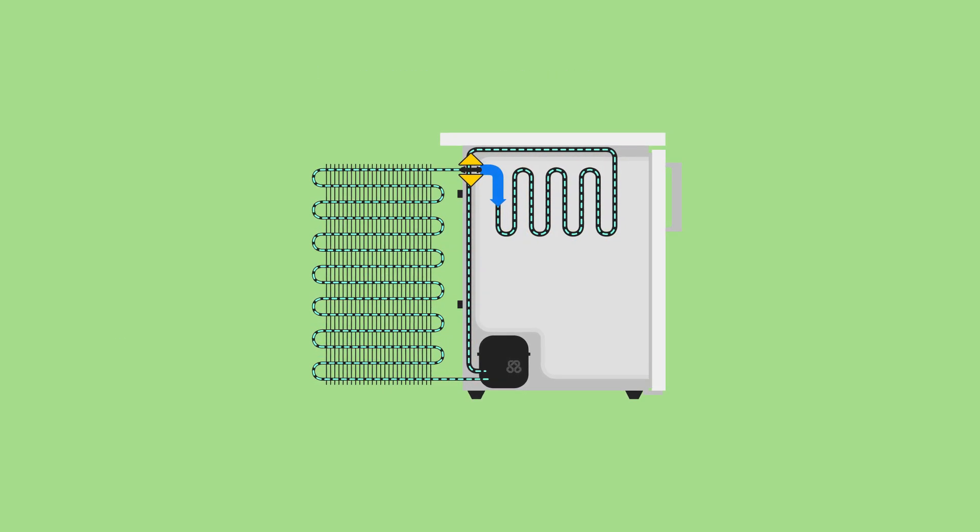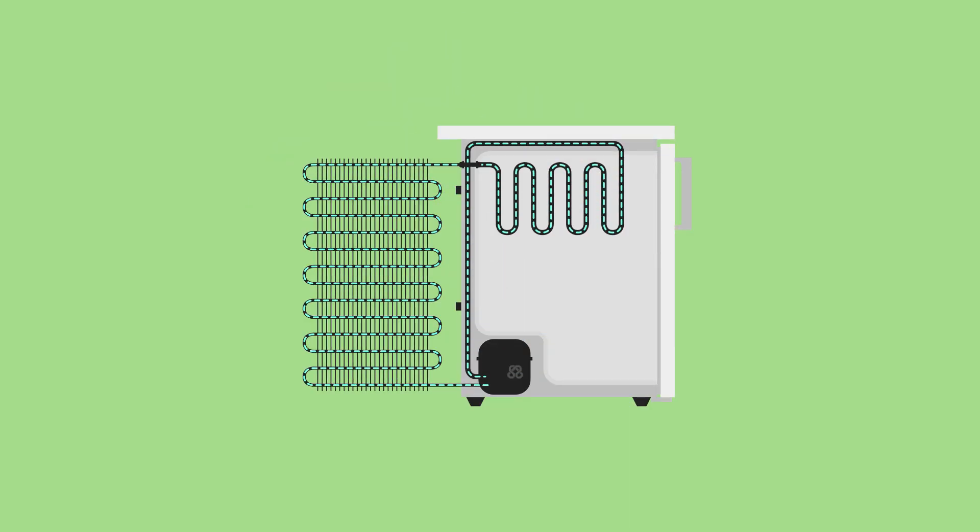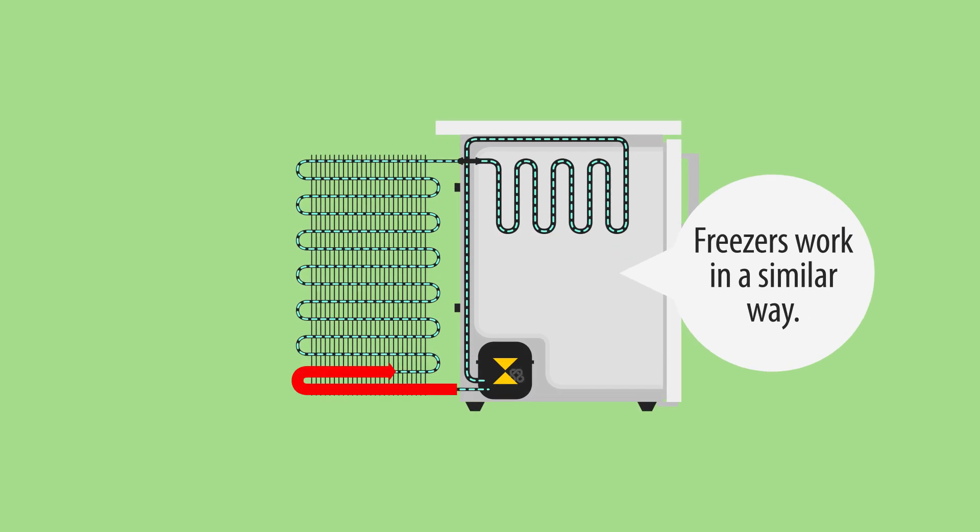As the coolant re-enters the evaporator, the sudden decrease in pressure causes about half the liquid to explosively evaporate. It again picks up heat from inside the fridge, and flows down to the compressor again.